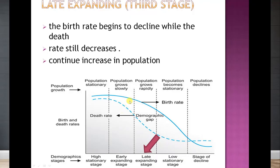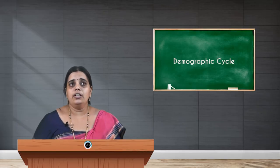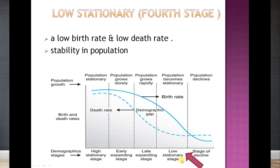The third stage is the late expanding stage. Here, the population growth becomes more rapid. The birth rate also begins to decline, but the death rate is still decreasing even more. You can see that the demographic gap has increased compared to the second stage. So this stage is characterized by rapid population growth.